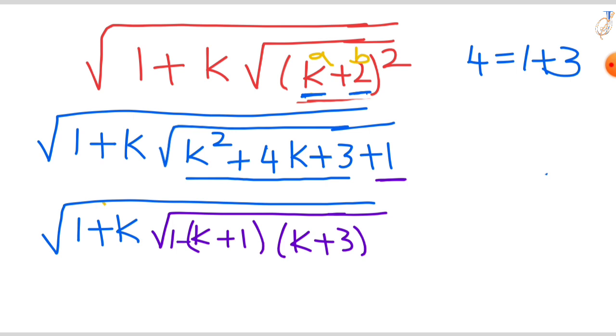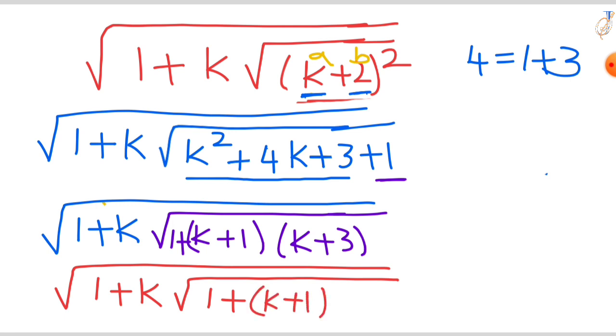1 plus k square root of 1 plus k plus 1. So this last term we always write in terms of perfect square. That's why this k plus 3 we can write as k plus 3 whole square and so on.